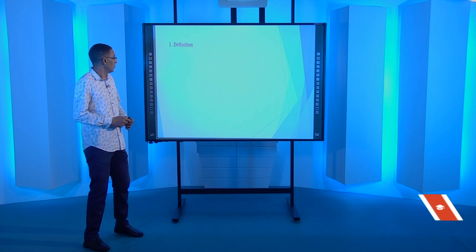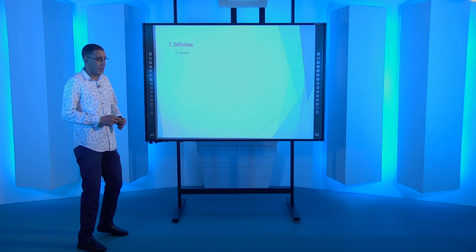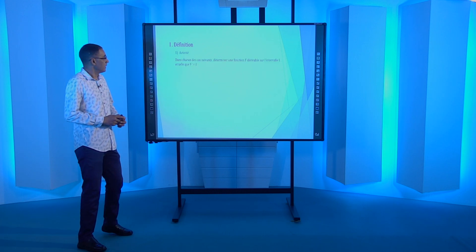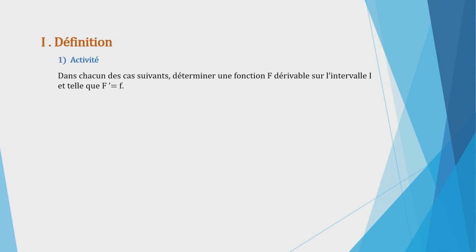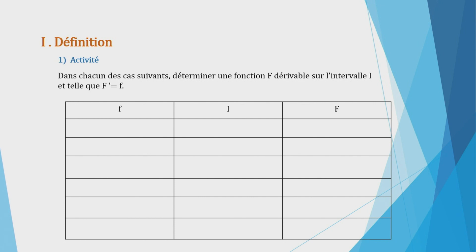Commençons par la définition. Soit l'activité suivante : dans chacun des cas suivants, déterminez une fonction grand F dérivable sur l'intervalle I telle que grand F' égale petit f. Passons à l'exemple A : soit la fonction qui à tout x associe 2, c'est une fonction constante, donc elle est définie sur tout ℝ. La fonction grand F qui à tout x associe 2x est dérivable, puisqu'il s'agit d'une fonction linéaire, donc dérivable sur tout ℝ, et F'(x) = 2.